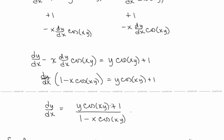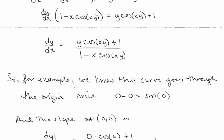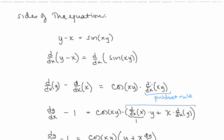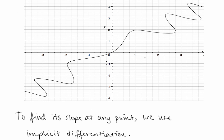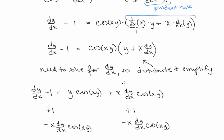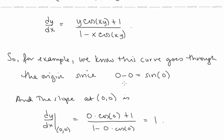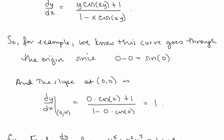Notice that dy/dx has both x's and y's in it, and that's perfectly okay — if we couldn't solve the original equation for y, we certainly don't expect to eliminate y from the derivative. For example, this curve passes through the origin since 0 minus 0 equals sine of 0. The slope at the origin is found by plugging x = 0 and y = 0, and that slope equals 1.